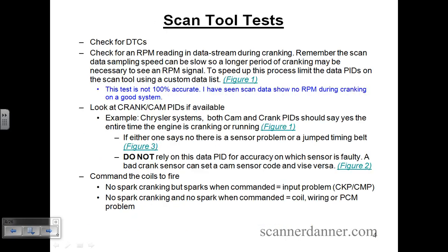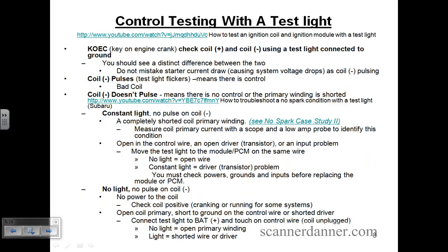So where we are now: control testing is where we're going — page eight, control testing. When we talk about control, I am talking about coil negative. Coil negative is the control circuit of the ignition coil. There were some systems back in the day that would switch the power side of the ignition coil — not any longer. All of our coils are ground-side controlled. There would be a transistor that is going to control the ground of this primary winding. It switches the primary on and off.